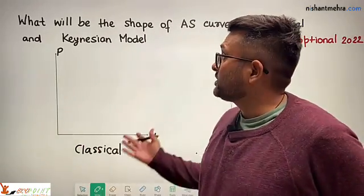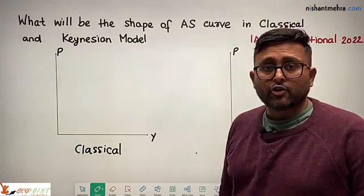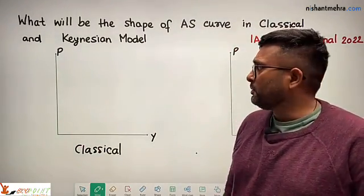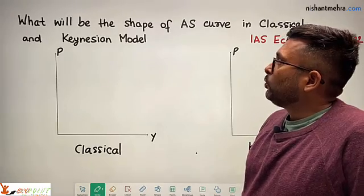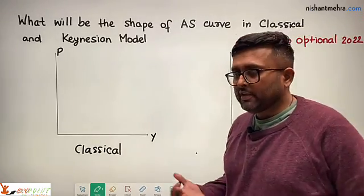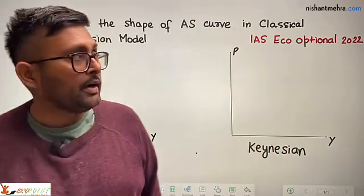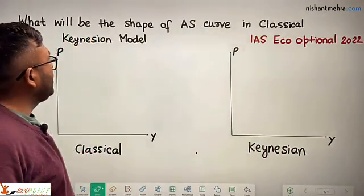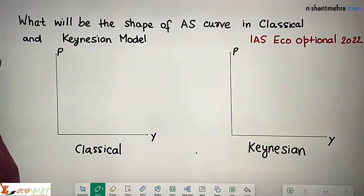Let us have a look at this question which came in IAS economic option in 2022: What will be the shape of the aggregate supply curve under the classical model and under the Keynesian model?